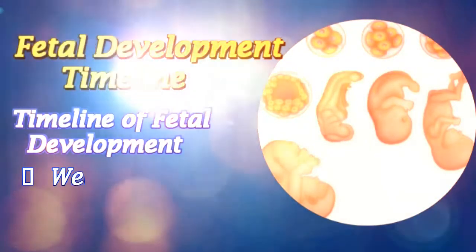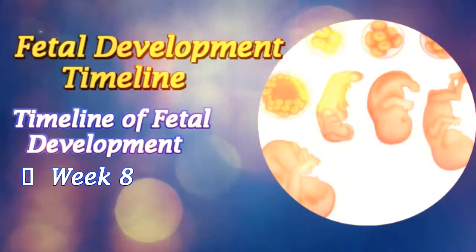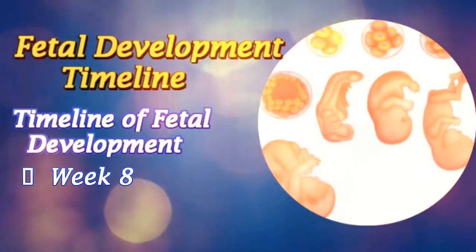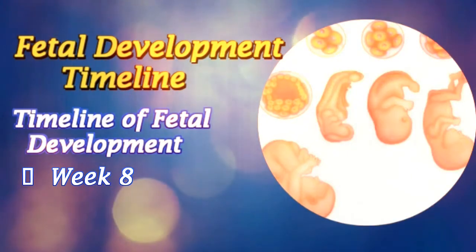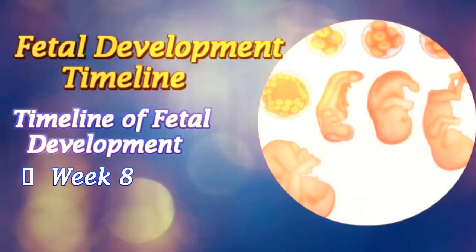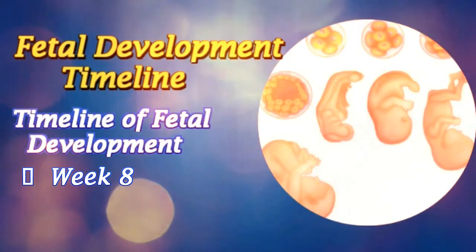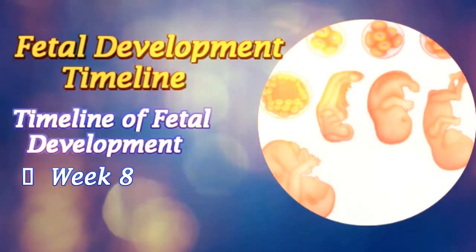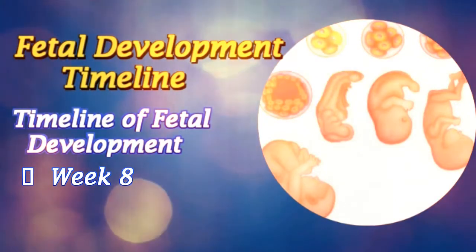Week 8: The embryo measures 13 mm in length. The brain continues to develop and the lungs begin to form. The lymphatic system also begins to develop.